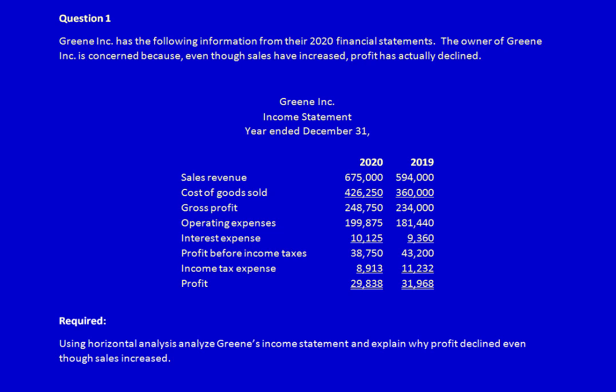Green Ink has the following information from the 2020 financial statements. The owner of Green Ink is concerned because even though sales have increased from $594,000 to $675,000, profit has actually declined from $31,968 down to $29,838. Required: using horizontal analysis, analyze Green's income statement and explain why profit declined even though sales increased.